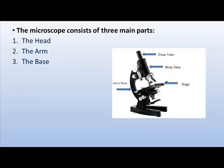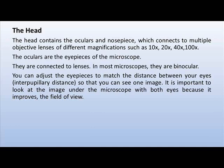The microscope consists of three main parts: the head, the arm, and the base. The head contains the oculars and nosepiece, which connects to multiple objective lenses of different magnifications such as 10x, 20x, 40x, and 100x. The oculars are the eyepieces of the microscope and they are connected to lenses.